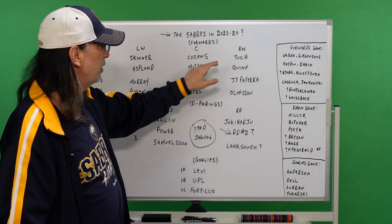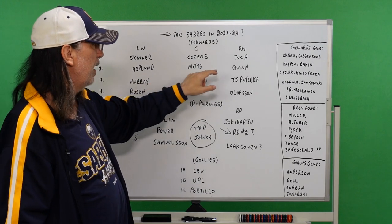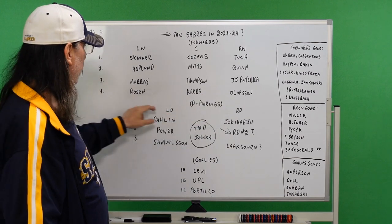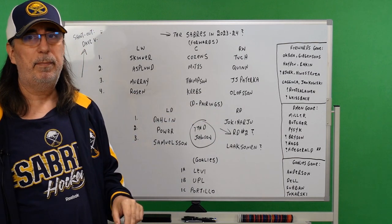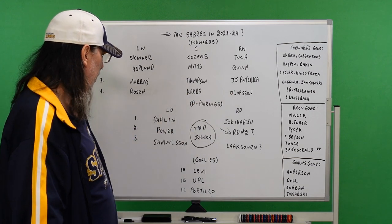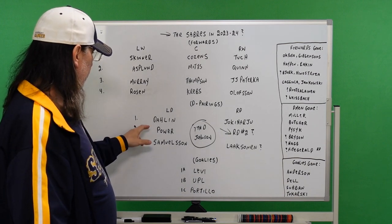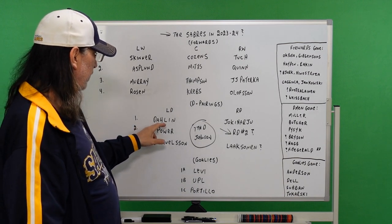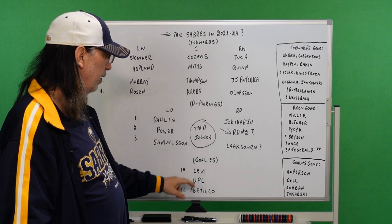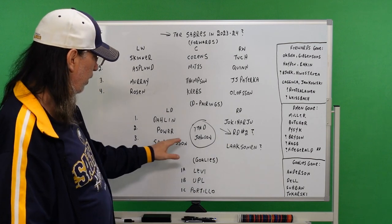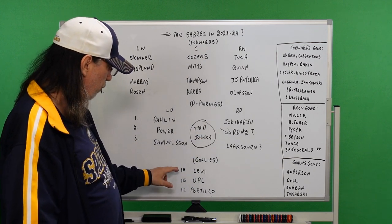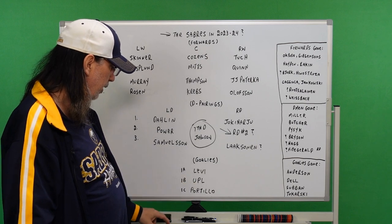So I got Skinner, Cozens, and Tuch on the first line. I got Asplund, Mittelstadt, and Quinn on the second line. I got Murray, Thompson, and Peterka on the third line. And on the fourth line I got Rosen. Yes, I know it's a bit of a long shot. Krebs and Olofsson. Because I believe first-rounders can come up by the time they're 20. And then you got, on our pairings and defense, I got Dahlin, Yokiharu, Power, and a player to be named later. Samuelsson and Laksonen on the bottom three. And our seventh D I have is Johnson. The goalies in order, I have 1A, I have Devin Levi, UPL, and Eric Portillo.